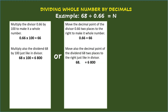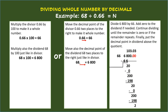Or, move the decimal point of the divisor 0.66 two places to the right to make it a whole number. So, 0.66 will become 66. Then move also the decimal point of the dividend 68 two places to the right, just like with the divisor. So, 68 will become 6,800. After this, divide 6,800 by 66. Add zero to the dividend if needed. Continue dividing until the remainder is zero or if the remainder repeats. Finally, put the decimal point in the dividend above the quotient. So, 6,800 divided by 66 equals 103.03. Note that we end up with a repeating decimal because the remainder repeats.